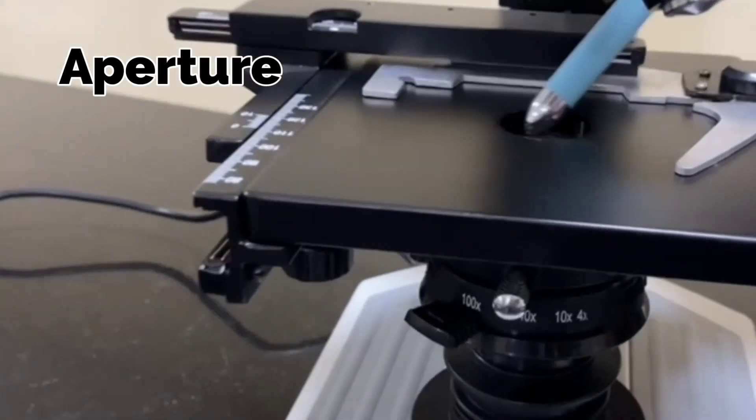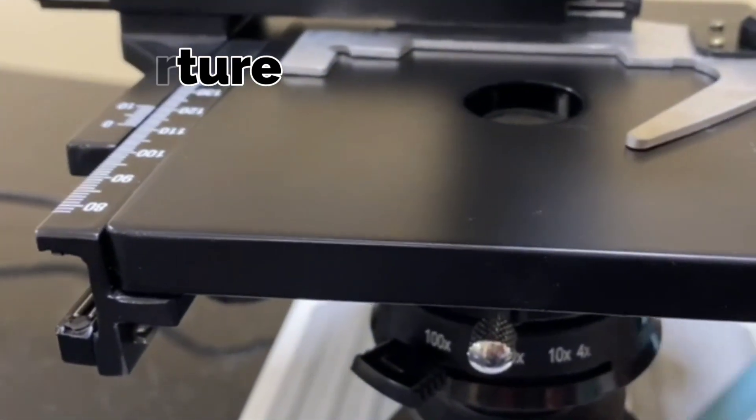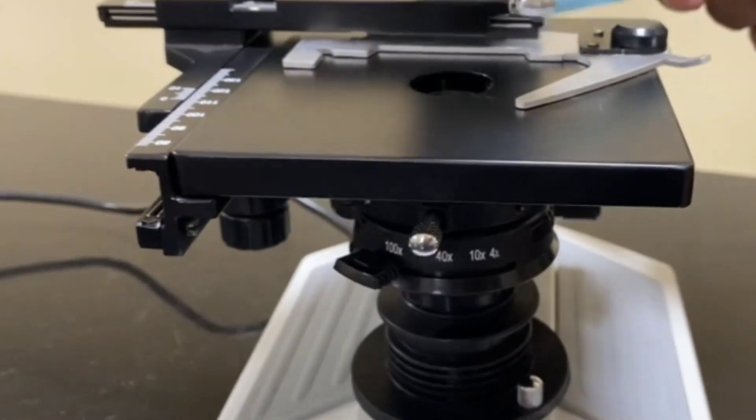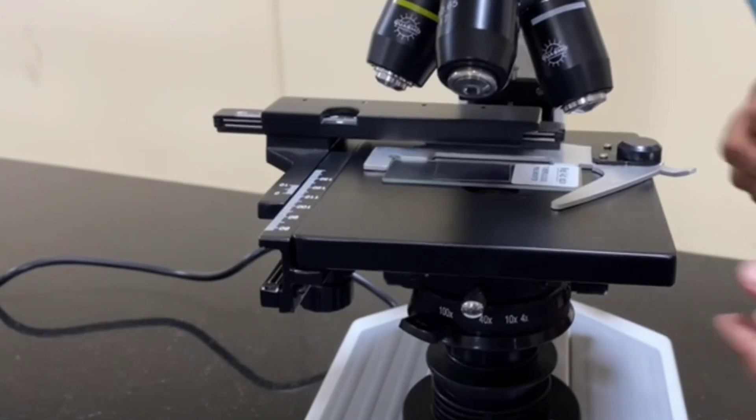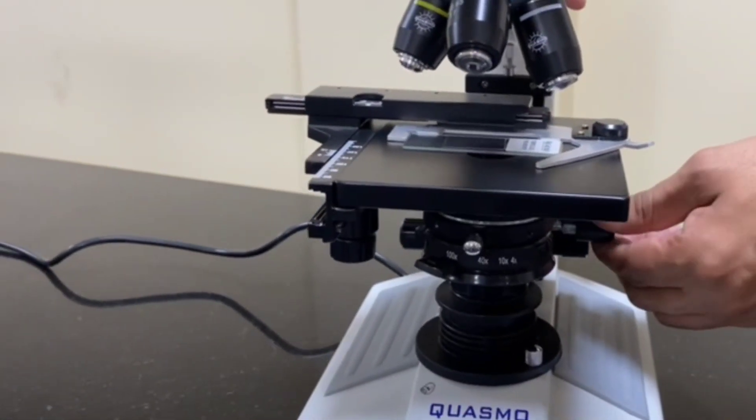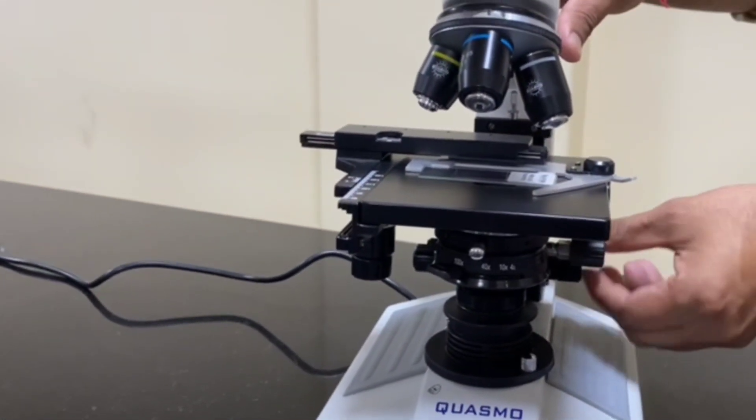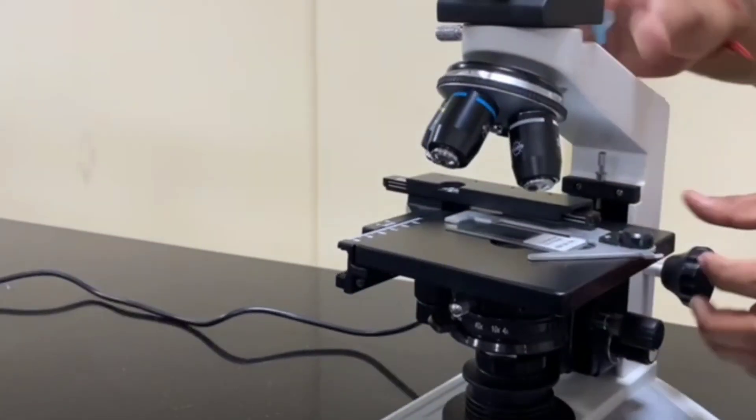This is the aperture of the microscope and light comes here from the downward portion. You can fix the slide here and you can visualize this slide by the help of objective lenses and eyepiece.